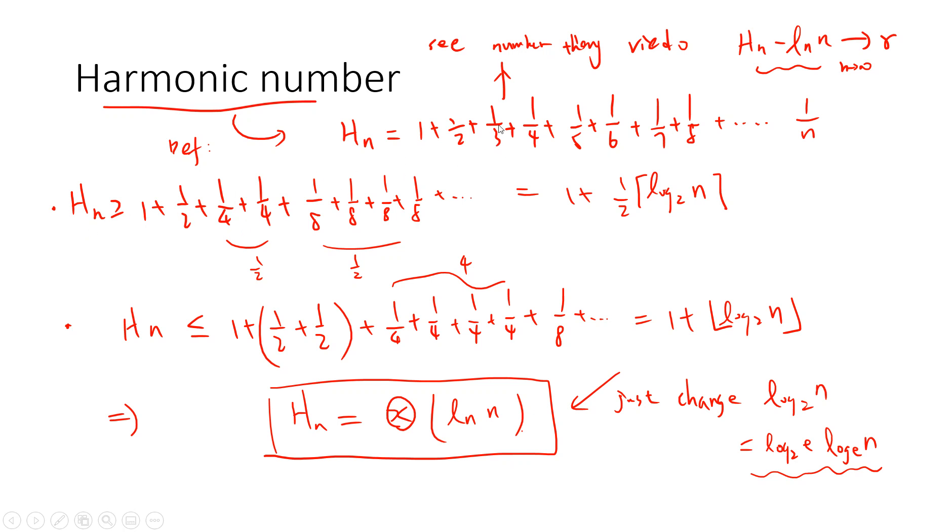So the lower bound is easy to just change this 1/3 to 1/4, 1/4, and then 1/5, 6, 7, 8 into 8. So you get this. So you see, the answer will be log_2 base n divided by half. Let's say if n equals to 4, you get 1, right? So you get 1, 1 plus 1 is 2. So the answer will be 1/2 plus the ceiling of log_2 n.